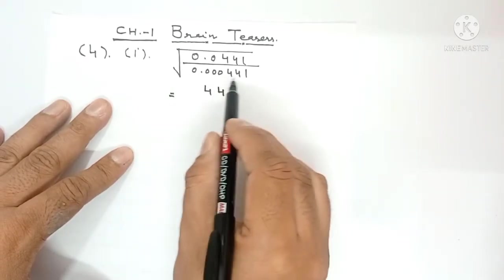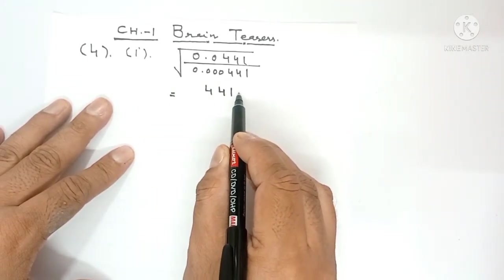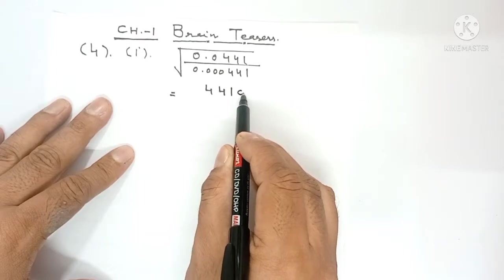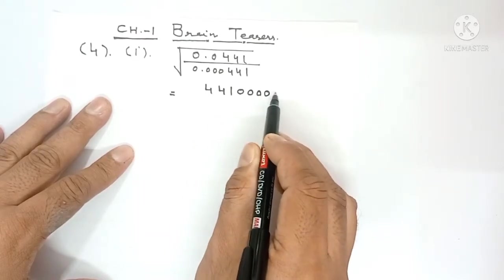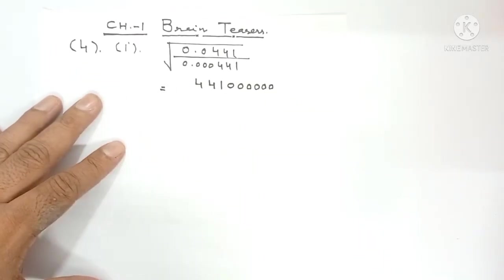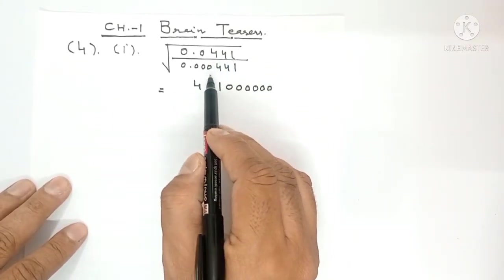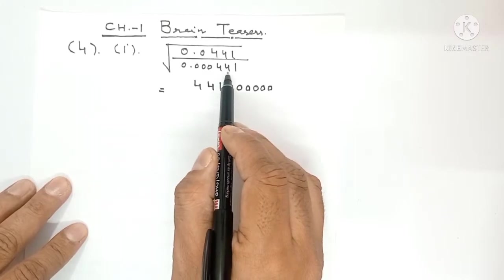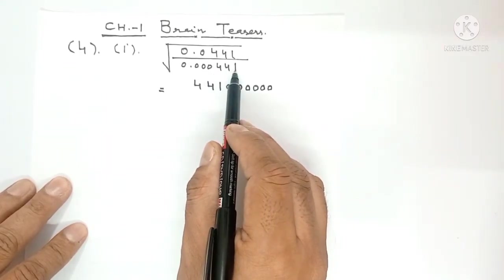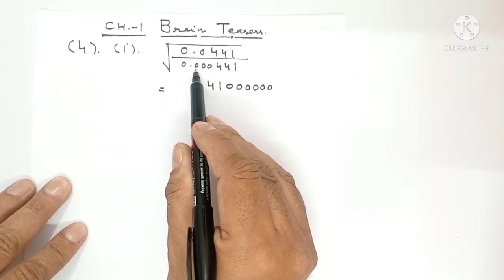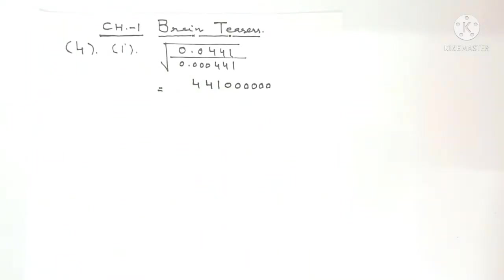The numerator has 1, 2, 3, 4, 5, 6 digits back from the decimal. So 6 digits back decimal.